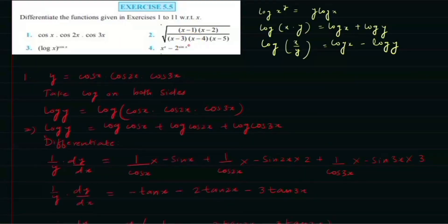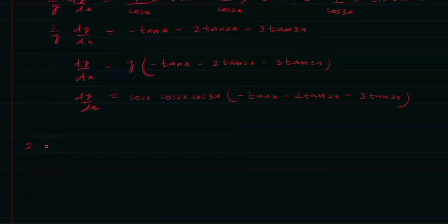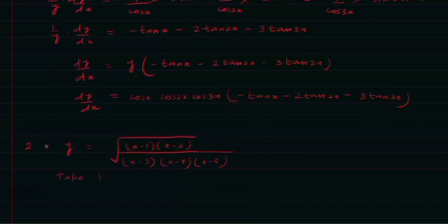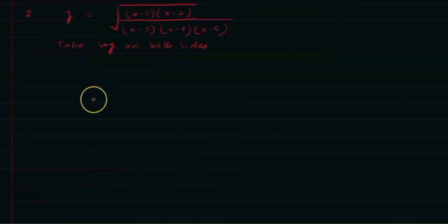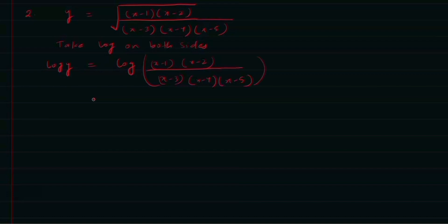Now consider question number 2: y = √[(x−1)(x−2) / ((x−3)(x−4)(x−5))]. We take log on both sides to simplify. Replacing the square root with power 1/2, we get log y = log[(x−1)(x−2) / ((x−3)(x−4)(x−5))]^(1/2).